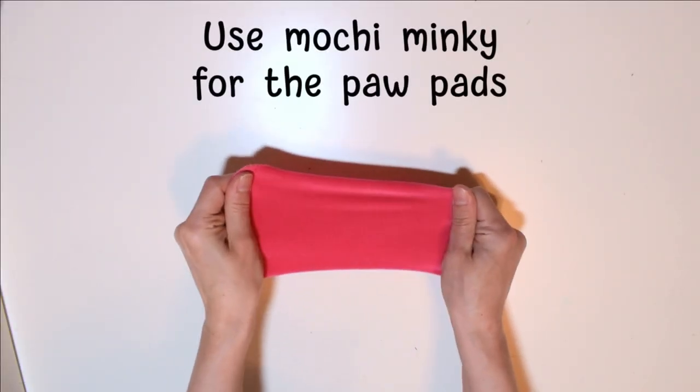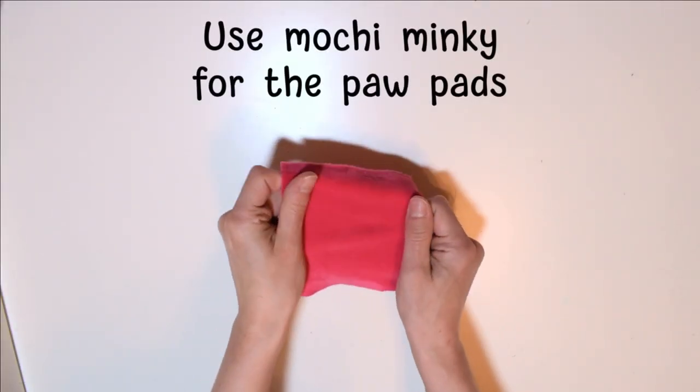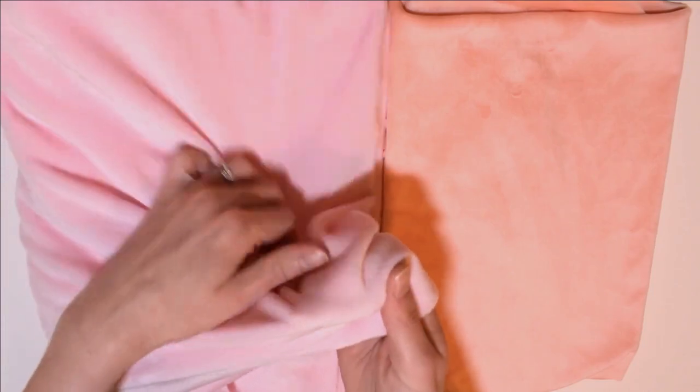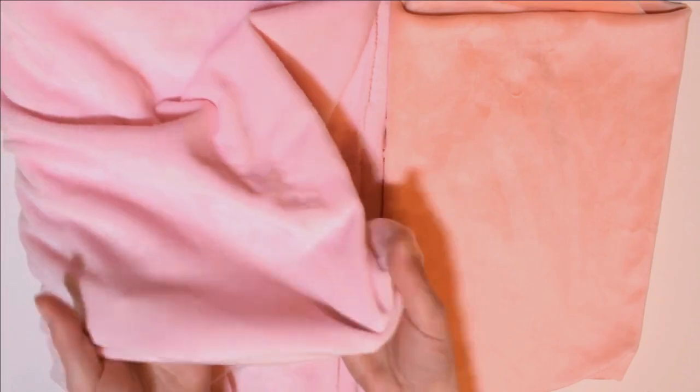First, Mochi Minky is essential to getting the right amount of puff to these paw pads. This is the type of fabric used in squishmallows. Check out my video on working with Mochi Minky to learn more about this type of fabric. I also have a guide on my website which I'll link in the description.